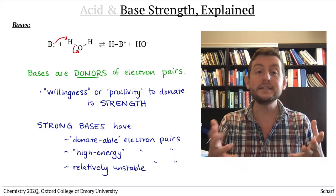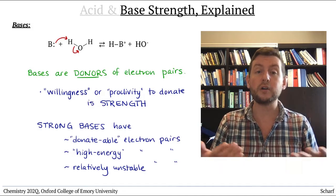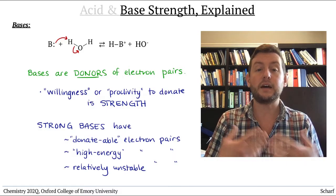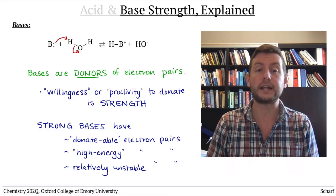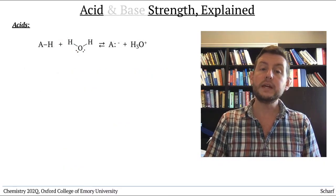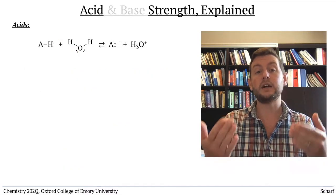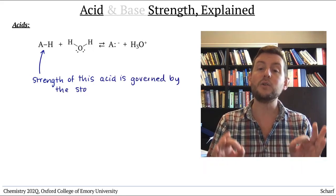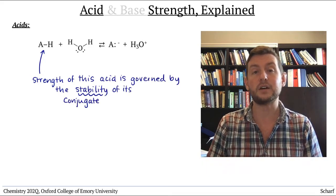And since we know that strong bases have weak conjugate acids and weak bases have stronger conjugate acids, we can say that the strength of an acid is governed by the energy or stability of its conjugate base.